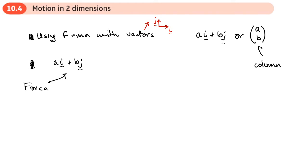equals some mass, which is going to be a scalar—it's going to be a number multiplied by the acceleration, and acceleration is also going to be written as a vector.